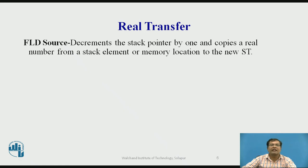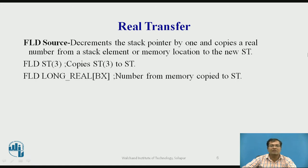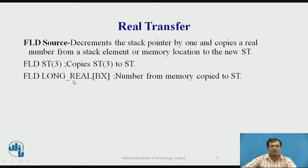FLD decrements the stack pointer by one and copies a real number from a stack element or memory location into a new location called ST. For example, FLD ST(3) copies ST(3) to ST — it picks from stack location ST(3) and stores into the new ST. FLD long real [BX] copies the number from memory location addressed by BX into ST.